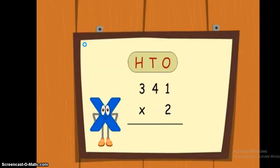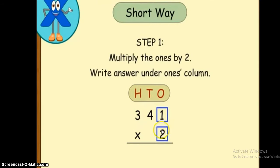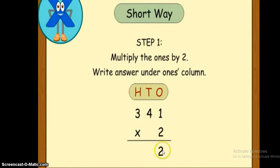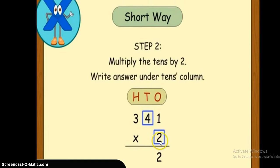We are going to line up the numbers, then we are going to start by multiplying two by the ones. Ones here is 1, so two times one equals two. We will write the answer under the ones column. Then we are going to multiply two by the tens. Tens here is 4.